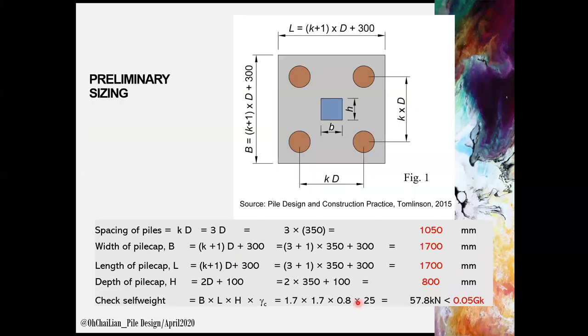Once we know the numbers of piles, we can base on the guideline provided by Tomlinson in sizing the pile cap as shown in figure 1. K is recommended between 2 to 3, depending on the soil condition. I use K equal to 3 in this case, and pile diameter is 350 mm. Using the guideline, we can obtain width, length, and depth of the pile cap. Self-weight of the pile cap is checked against and shall be lesser than the assumed self-weight. If this is not complied, repeat the calculation for the numbers of pile required.